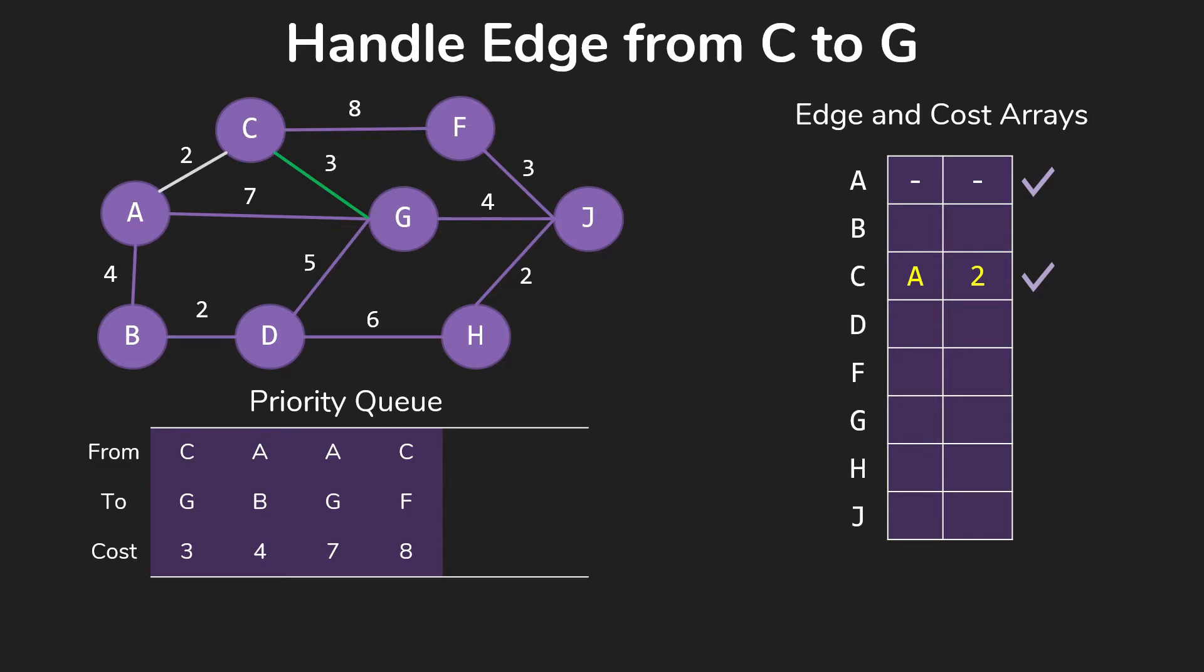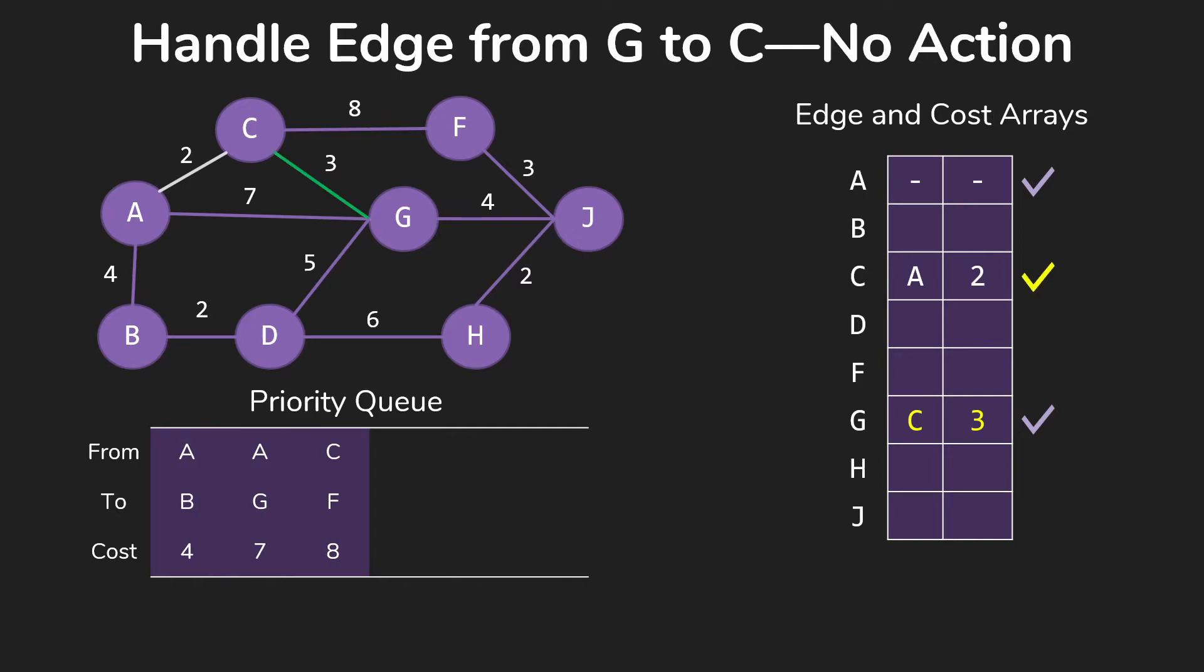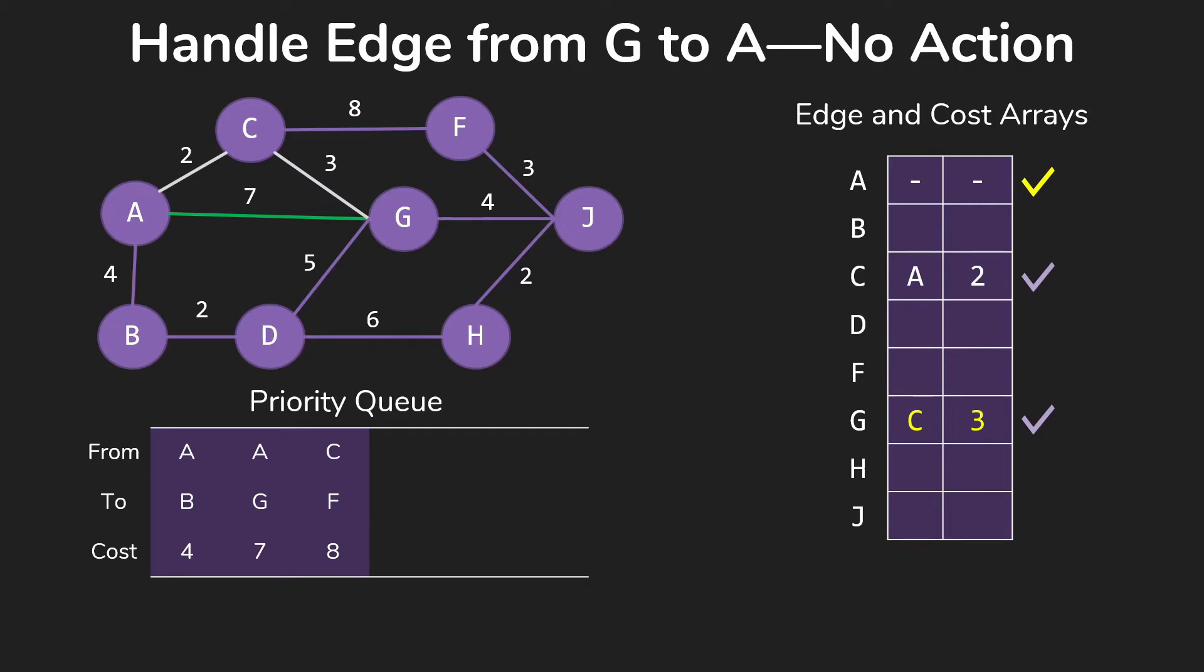That's all of our edges out of C. So we'll check our loop conditions, and then move on to take the first thing off of our priority queue, which in this case will be CG for 3. We then start handling edges out of G, starting with GC, which, of course, doesn't get us anywhere. GA doesn't get us anywhere. Both of those things we already had in our tree.